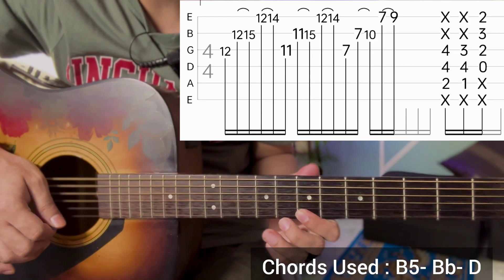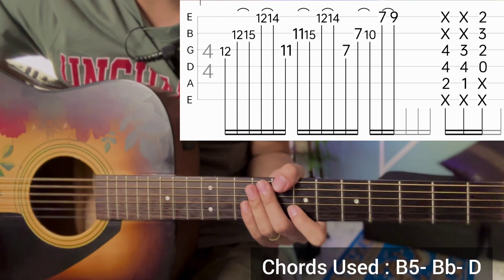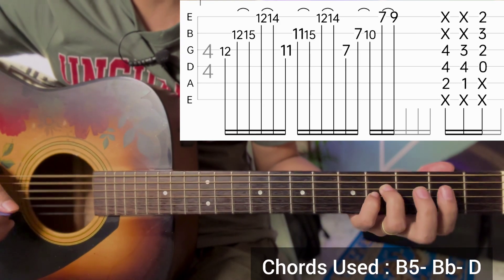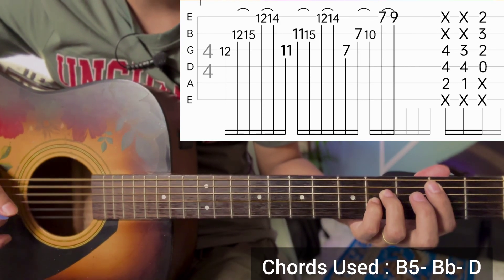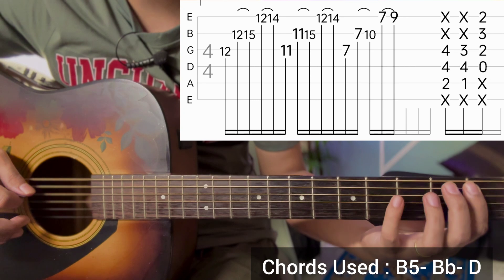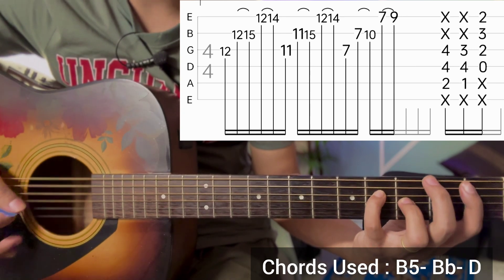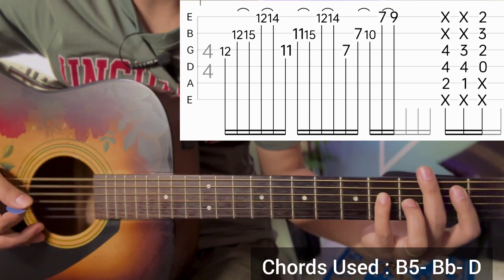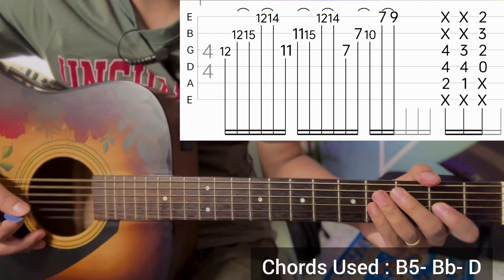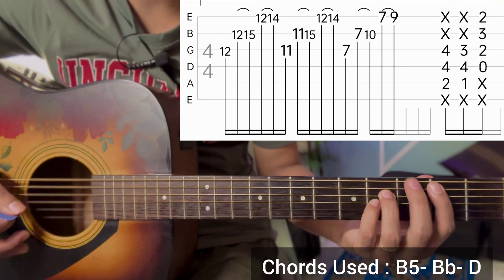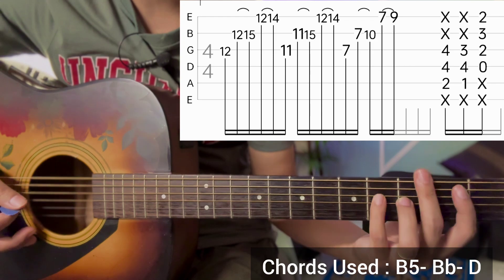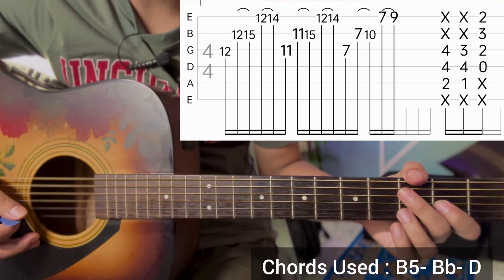Second string is 7-10. Now we can do the normal B5 power chord on the fifth string, fourth string is 4, third string is 3. Last one is D major, then we can do the chord strumming down, down, down, down, down, down.